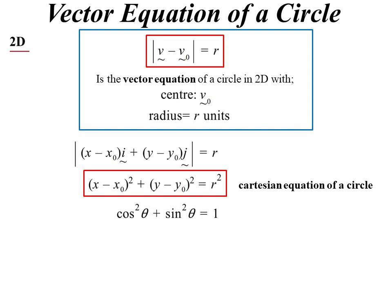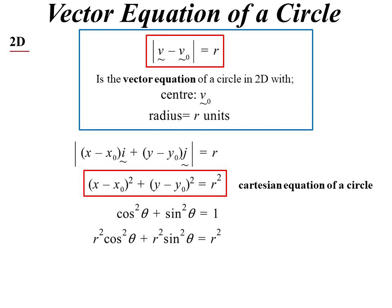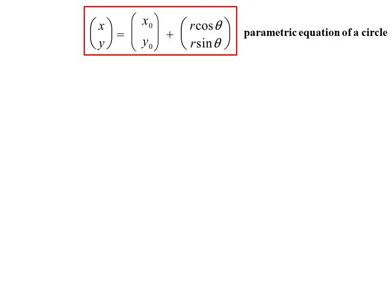Now, we know cos² θ + sin² θ = 1. If I multiply everything by r², and then let x - x₀ = r cos θ, y - y₀ = r sin θ, we come up with parametrics. So x = x₀ + r cos θ, y = y₀ + r sin θ, which is the parametric equation of a circle.